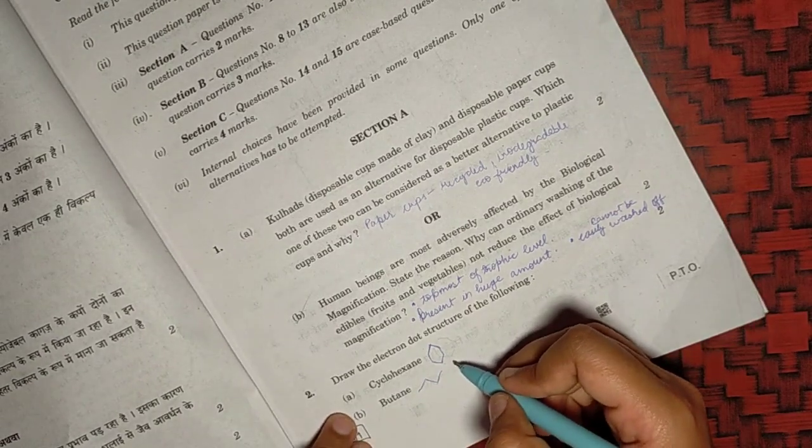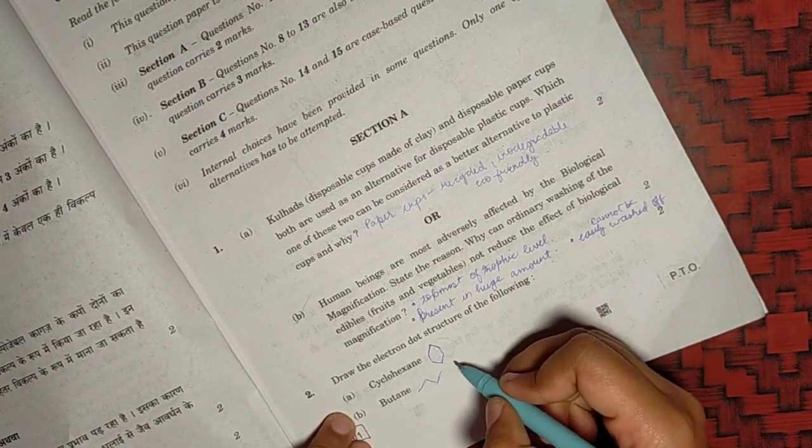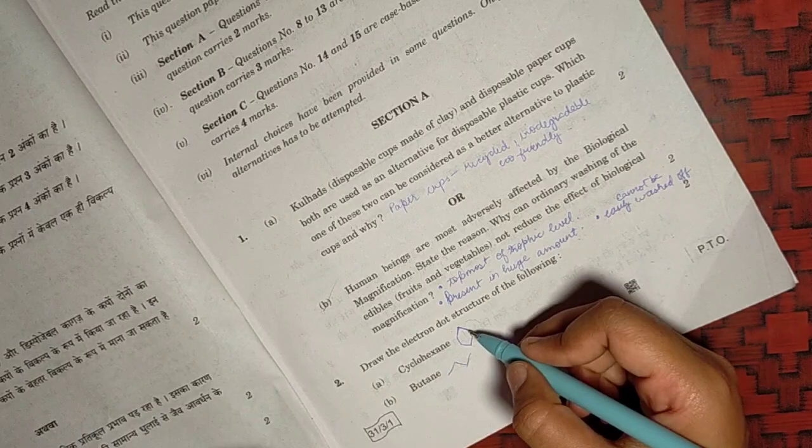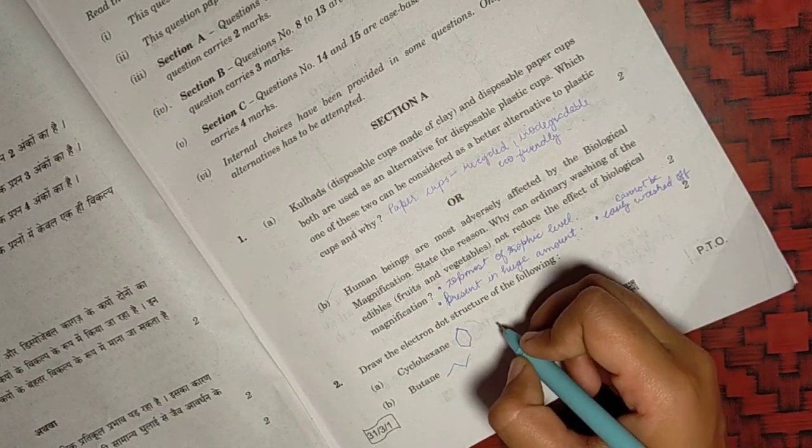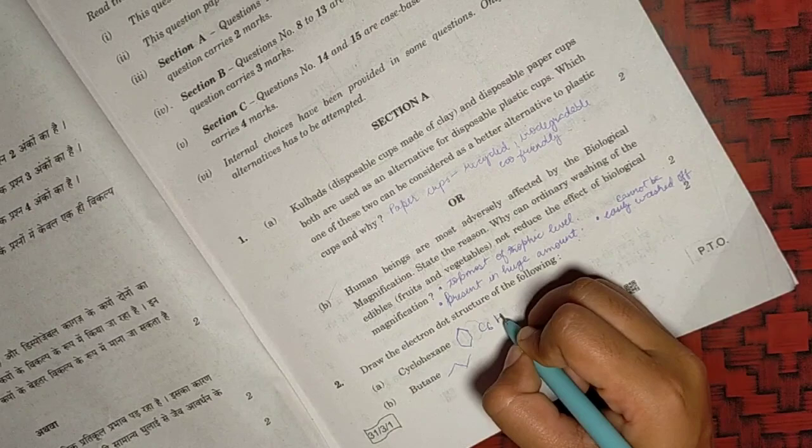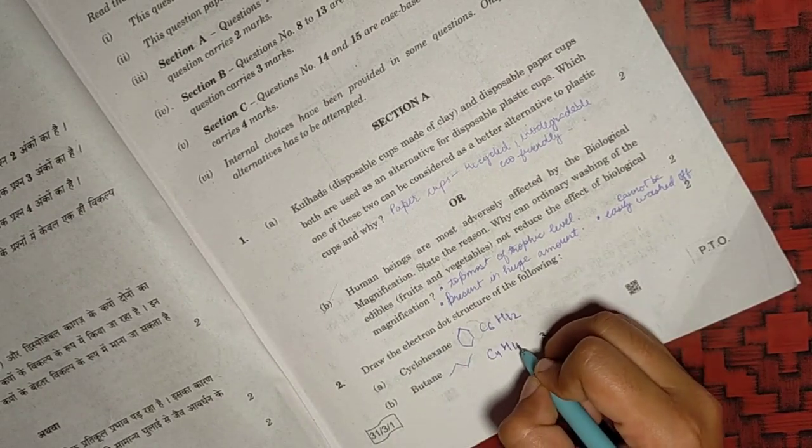Then second, we have to make the electron dot structure. This will look like this with the lines but you have to draw the electrons of both the carbon and the hydrogen. It will be cyclohexane will be C6H12 and butane will be C4H10.